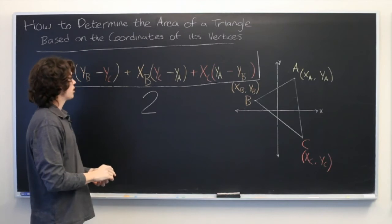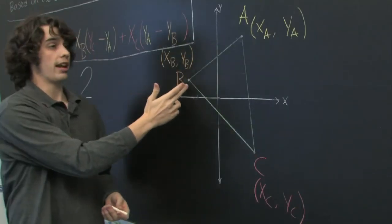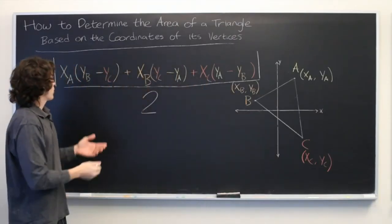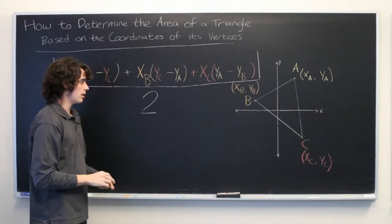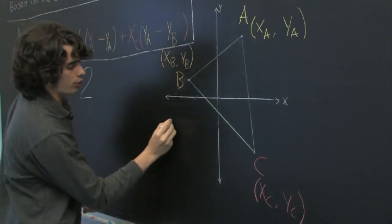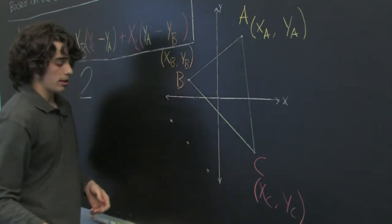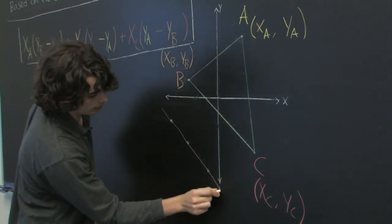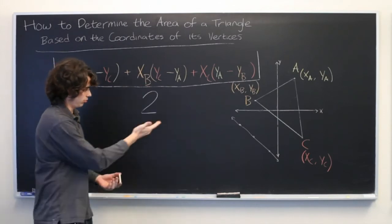A couple things to keep in mind about this is that this will work even if some or all of the coordinates are negative, as you can see here. And also, if you compute this and find that the area is zero, what that means is that the three points of your triangle are actually collinear, meaning that they are along the same line, like so, because then that's not even a triangle. It's just a line.